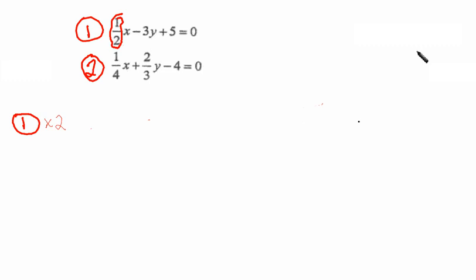And what that gives me is 2 over 2x minus 6y plus 10 equals 0. And of course 2 over 2x is 1x. So I have this equation and I now have an equation exactly equivalent to the equation I was given, but now there's no fractions.